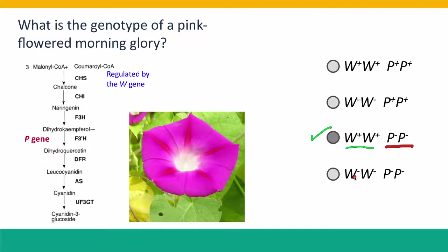The second reason for saying it must have a functional W gene is because the W gene regulates transcription of the whole pathway — specifically the chalcone synthase step. If that step was non-functional, if the plant had a defective W gene, the whole pathway would be inactive and dihydrochemferol would never be synthesized, so no pink pigment could be synthesized anyway.